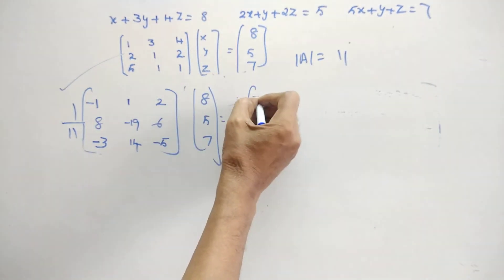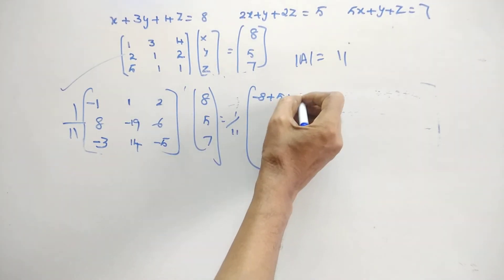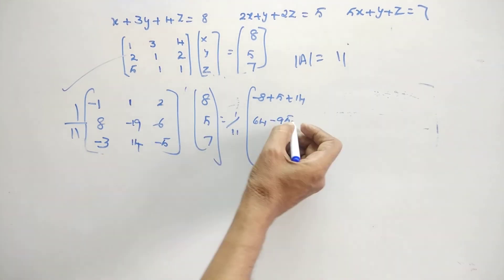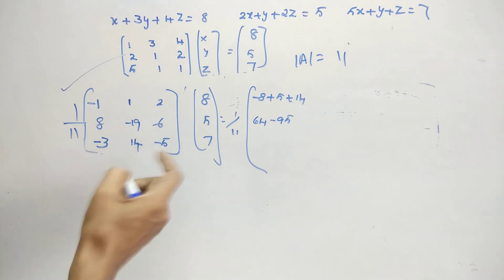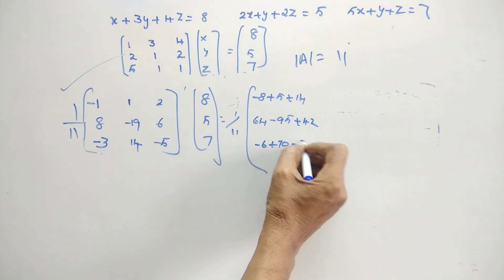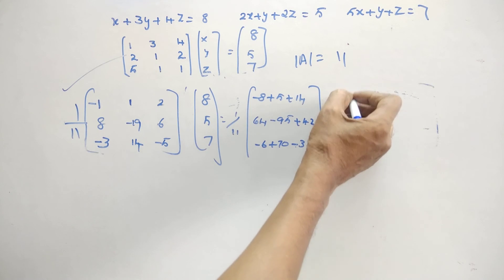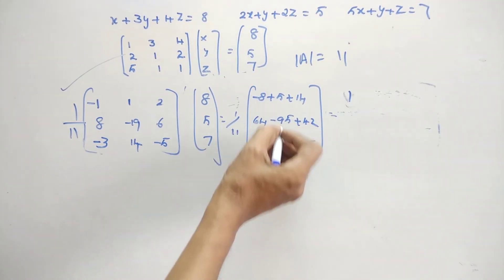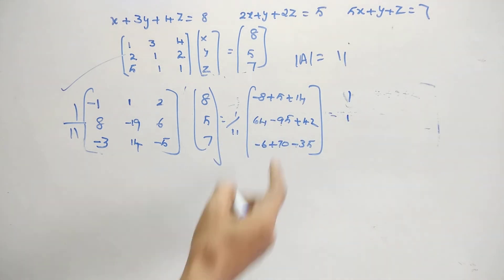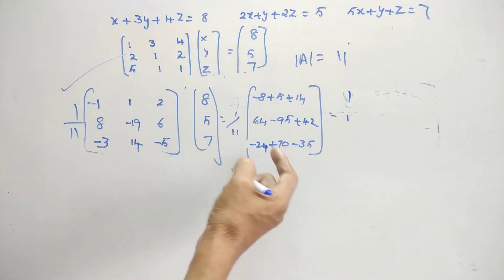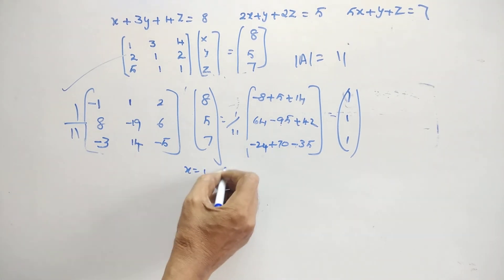Now minus 8 plus 5, 7, 2s are 14. The next one 8, 8s are 64, minus 19 into 5, minus 95 and this is 6. This is 6 into 7s are 42. The third one minus 6 plus 17 minus 35. Then this one simplification gives you 14 plus 5, 19, 19 minus 8, 11, 11 by 11, so 1. 64 plus 42, 106 minus 95, again 11, 11 by 11. The next one minus 3 into 8, so minus 24. So minus 24 and minus 35, minus 59 plus 70 plus 11, 11 by 11, 1. So you got 1, 1, 1, which is equivalent to saying that x equal to 1, y equal to 1, z equal to 1.